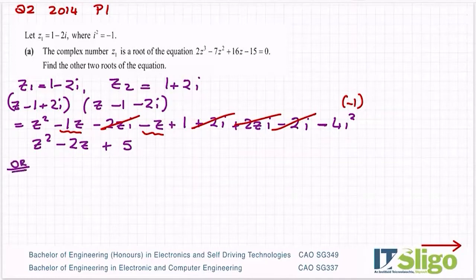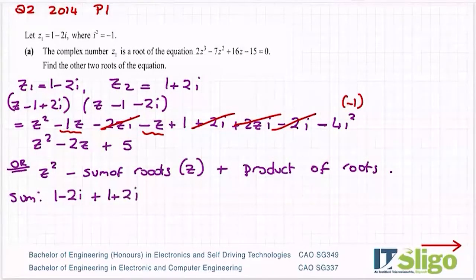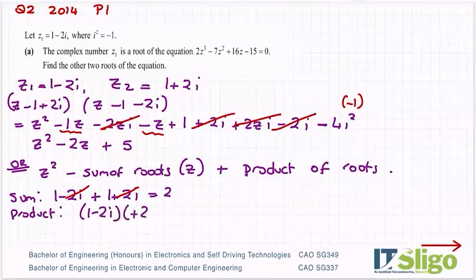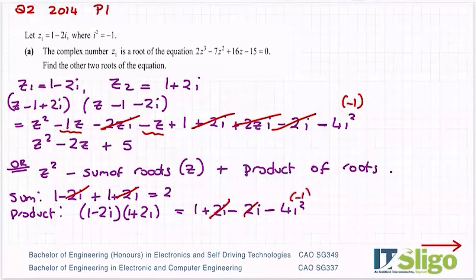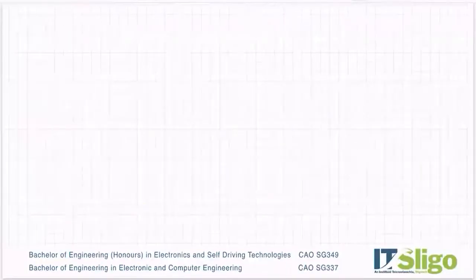Alternatively, you can use sum of roots and product of roots. Any quadratic is z squared minus (sum of roots)·z plus (product of roots). The sum of the roots is (1 minus 2i) plus (1 plus 2i) — the i's cancel — giving 2. The product is (1 minus 2i)(1 plus 2i) = 1 minus 4i squared = 1 plus 4 = 5. So subbing in: z squared minus 2z plus 5. However you get to your quadratic doesn't matter — you just need to get there.